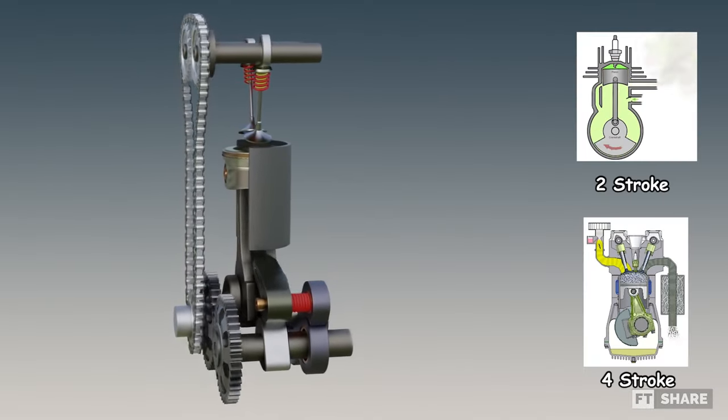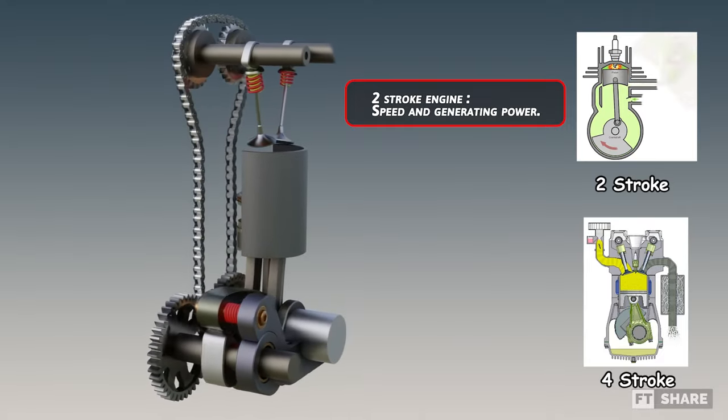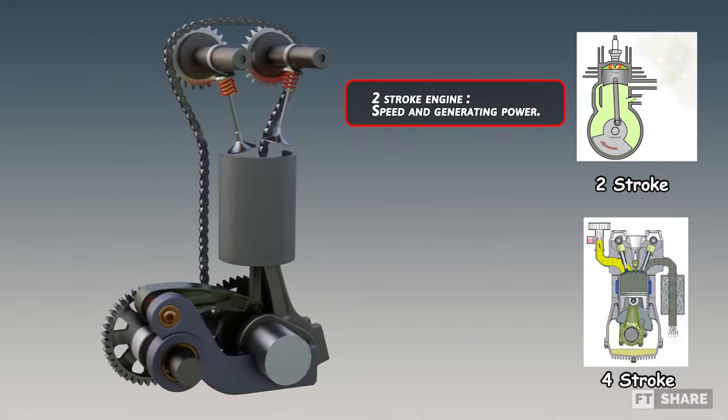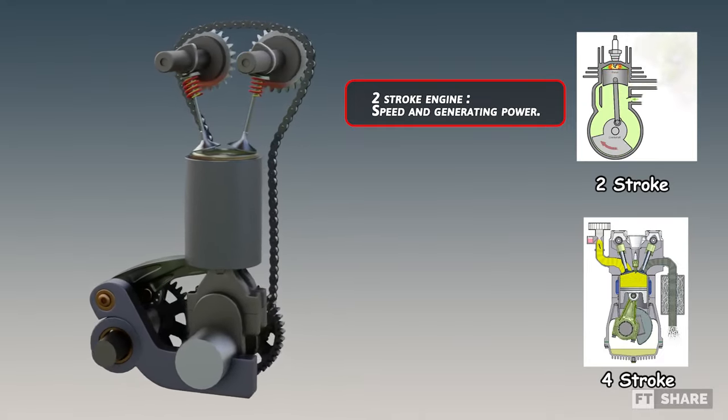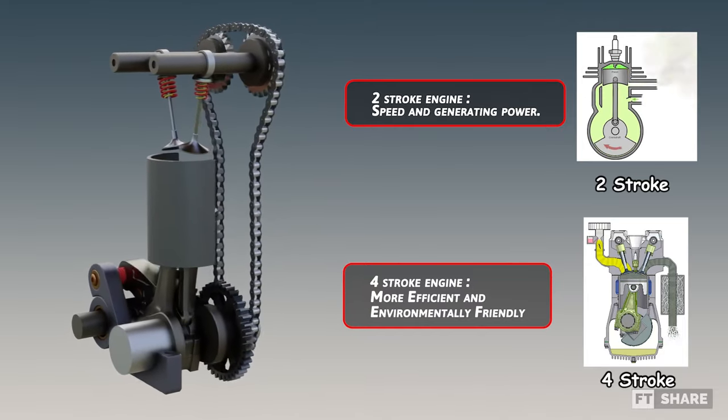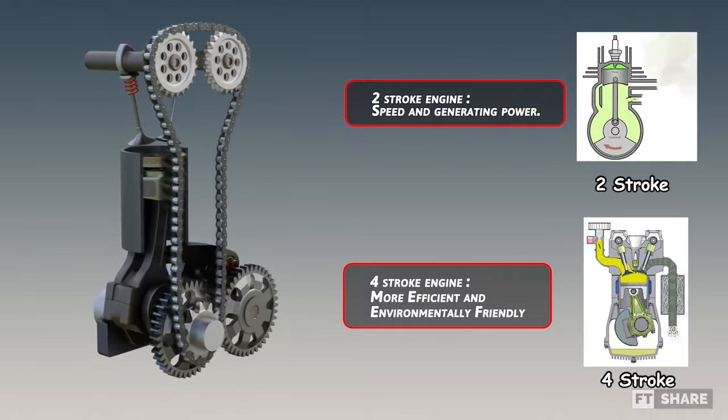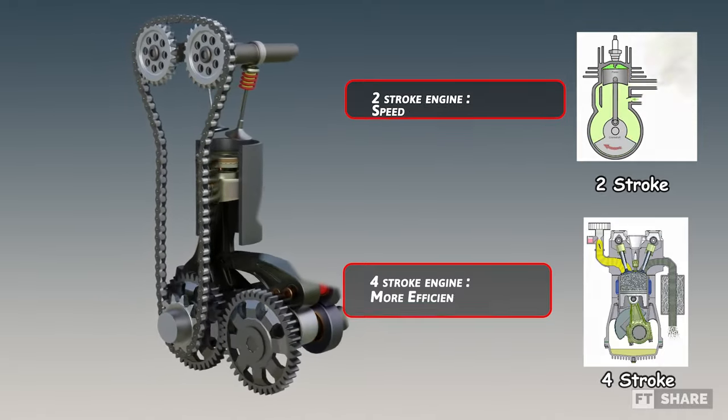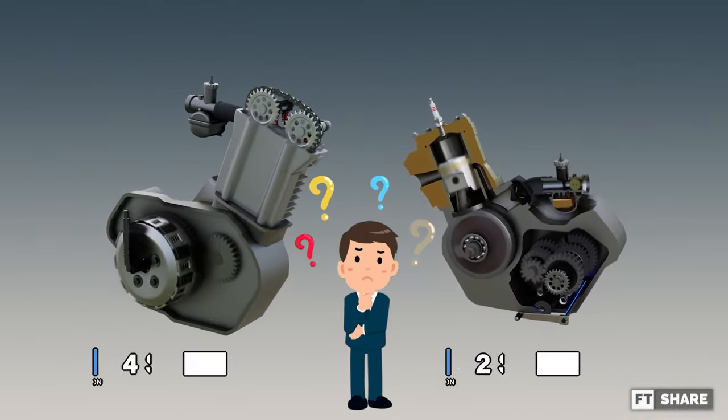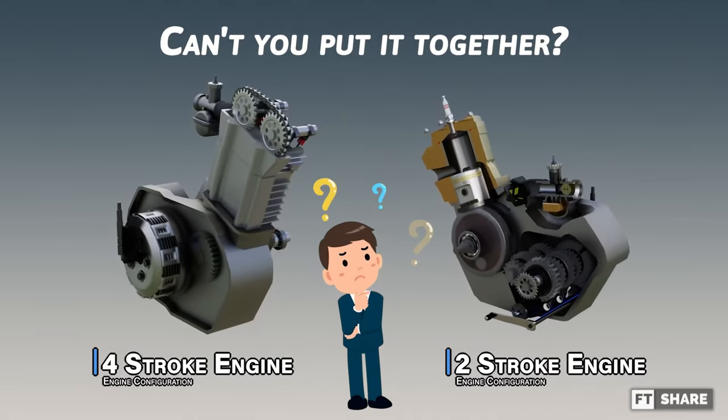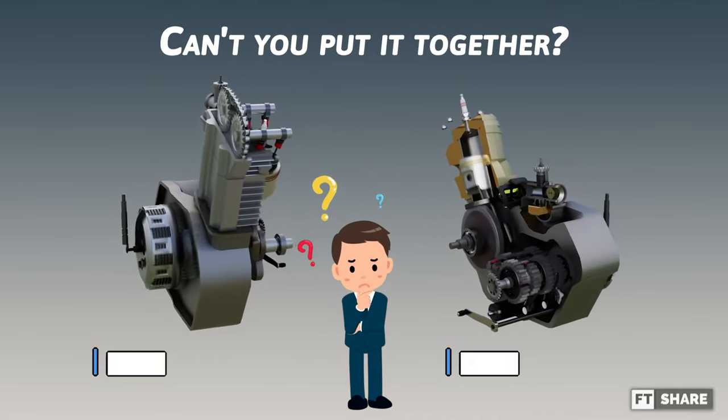So from our previous explanation, we can draw conclusions. If a 2-stroke engine is superior when it comes to speed to produce power, while the 4-stroke engine is more efficient and also environmentally friendly, but of course, it's a bit smaller when we talk about horsepower. So the question is, do you think it's possible to combine these two advantages and that they can cover each other's shortcomings?